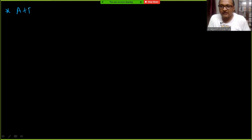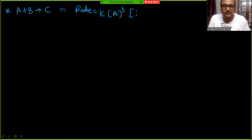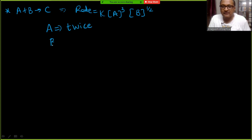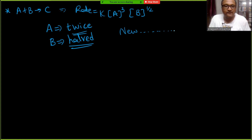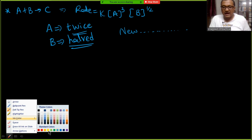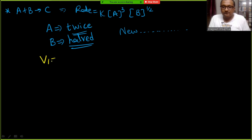Next problem: reaction A + B → C, rate = K[A]³[B]^(1/2). If A is doubled and B is halved, what will be the new rate with respect to the old one? V1 = K × A³ × B^(1/2).